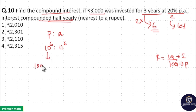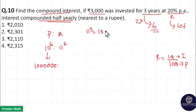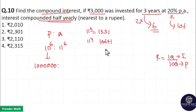Here 10 raised to 6 is equal to 10,00,000 (10 lakh). For 11 raised to 6, we first compute: 11 cubed is equal to 1331. Then 11 raised to 4 is equal to 14641.